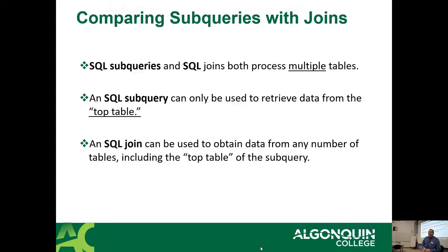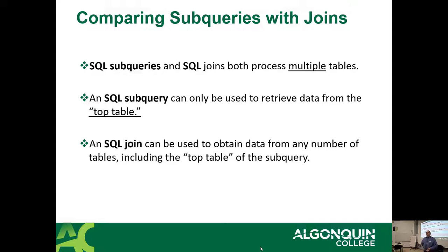Comparing subqueries to joins: both pull from multiple tables. A subquery only retrieves data from the topmost table. A join retrieves data from any number of tables in the join. With the FlightDB — which is actually real data from a system called Flight Aware that used to publish their database publicly every six months — it's entirely possible to join every single table: countries, airports, routes, airlines, route_aircraft, and aircraft all together in one query.